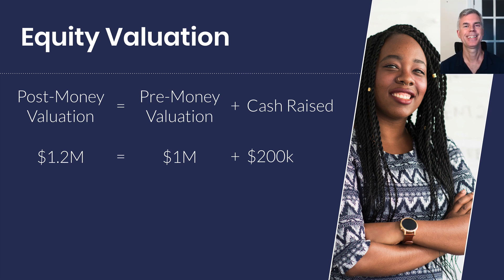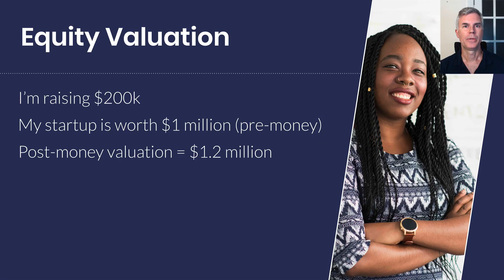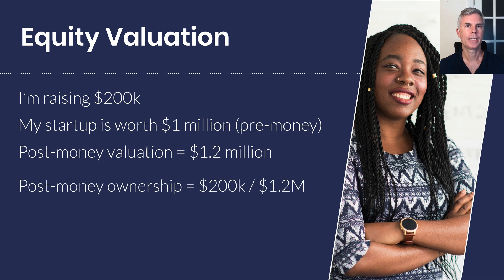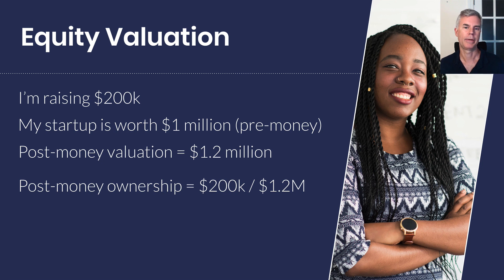Easy, right? How much does the investor own? The investor owns $200,000 worth of the $1.2 million. You might think the investor owns 20%, but that would be $200,000 of the $1 million. Remember, the post-money valuation is $1.2 million.